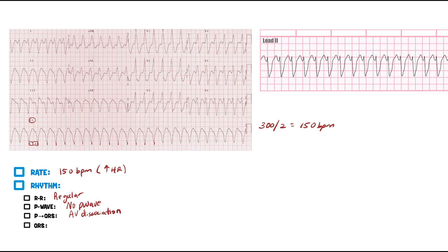Next: are the QRS complexes wide or narrow? I have a wide complex — it's almost one large box. Remember, three small boxes is already 0.12 seconds, which is already too wide. So this is definitely a wide QRS complex.